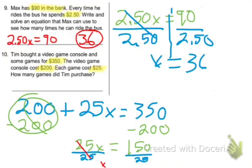These cancel and we get X equals 6. So how many games did he purchase? 6 games.